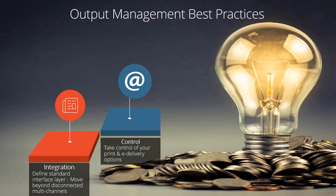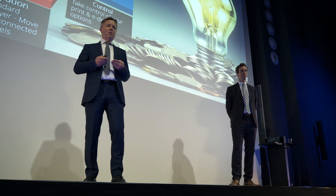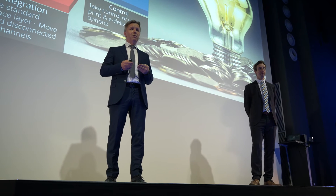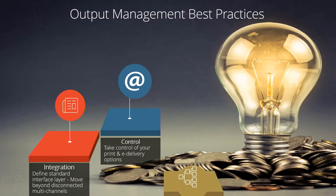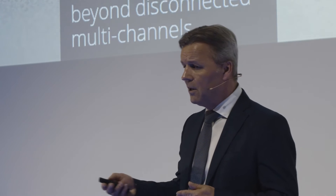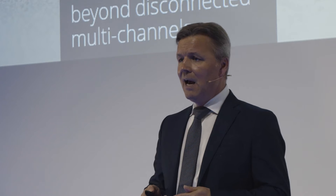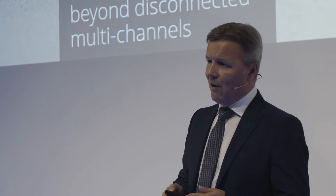This leads to the next thing: control. You can only run a production system like that when you have full control over things which are coming in and coming out. And this integration and control gives you the flexibility you need. You need to service not like 30 years ago one output channel which was central print — you need to service a variety of output channels, of communications with your clients.